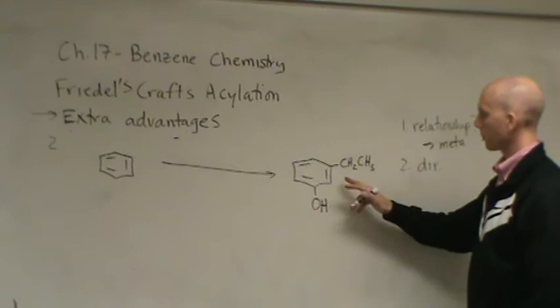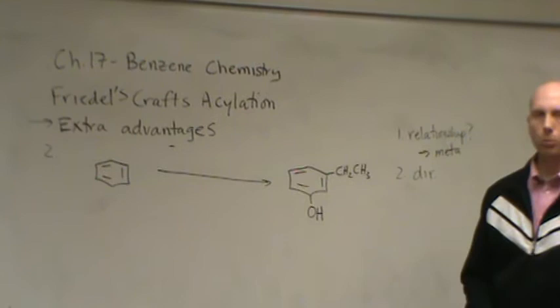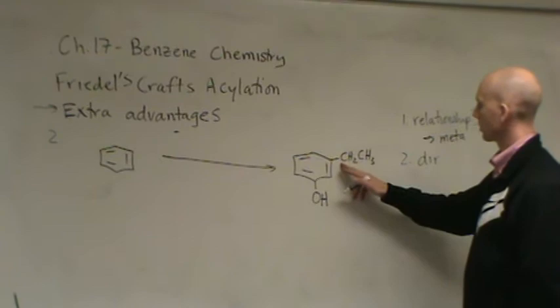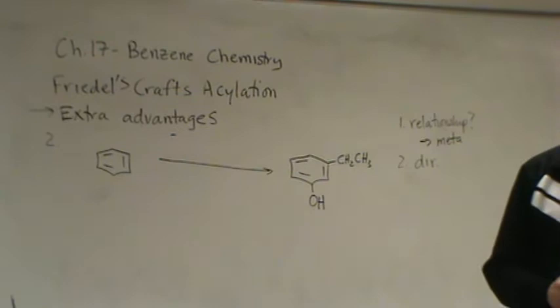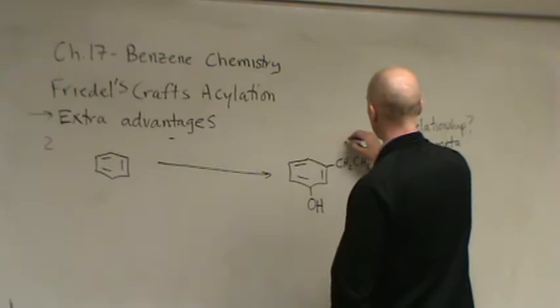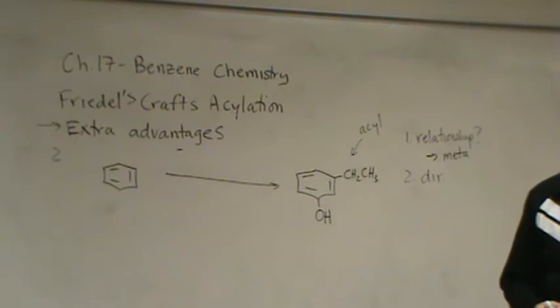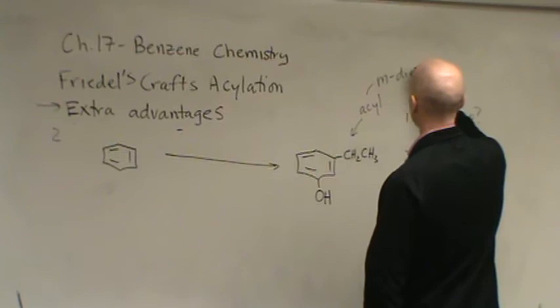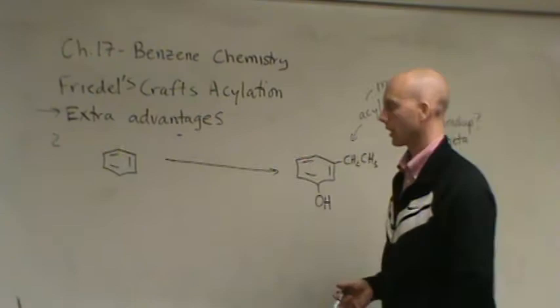Well, which group am I going to put on first? This is an ortho-para director. But we want to put that on there. What about this one? This is an alkyl group, which is an ortho-para director. So, here we might say, is this impossible to make? Answer no. We're going to put this on previously as an acyl group. And remember that the acyl group is a meta-director. So, let's go ahead with this strategy.